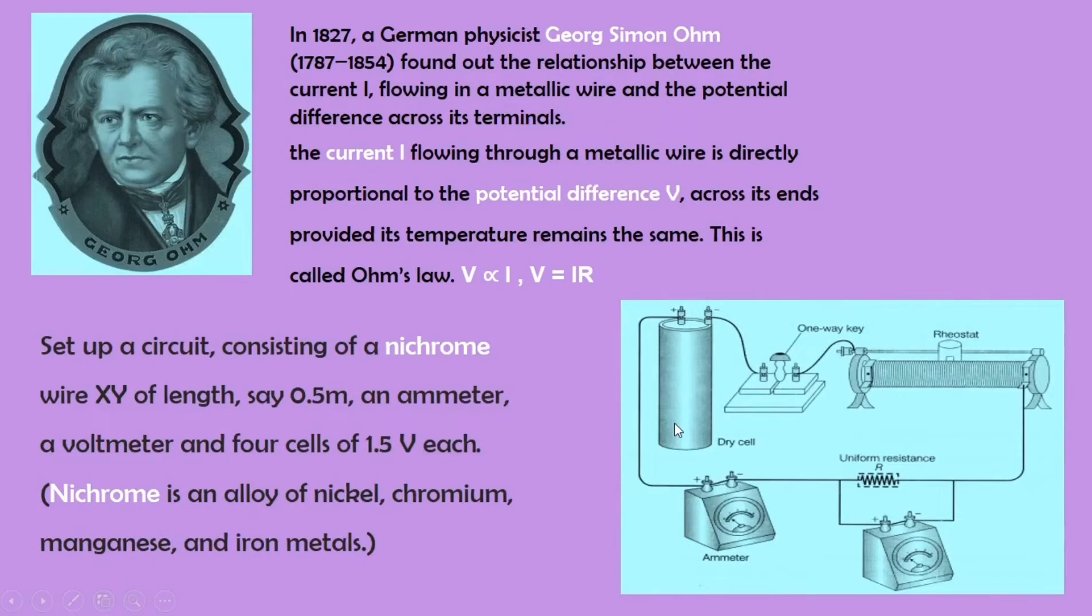In 1827, a German physicist, George Simon Ohm, found out a relation between electric current and potential difference. And he stated that by a law called Ohm's law, which defines this: the current I flowing through a metallic wire is directly proportional to the potential difference across its ends, provided temperature remains same. This is called Ohm's law, i.e. V is directly proportional to I or V equals I times R.